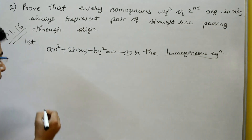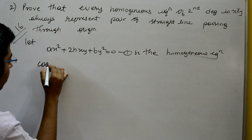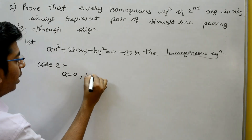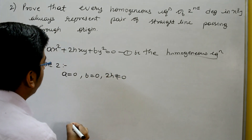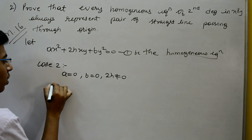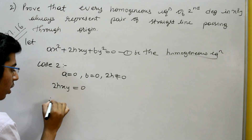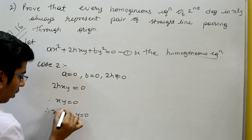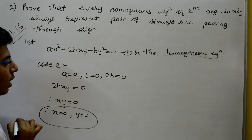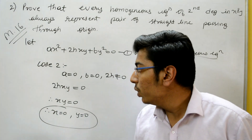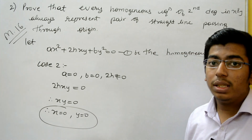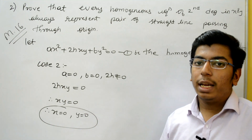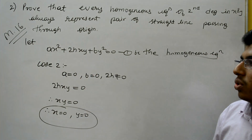Case 2: put A = 0 and B = 0, but 2H ≠ 0. Then equation 1 becomes 2HXY = 0, therefore XY = 0, giving X = 0 and Y = 0. We get two lines passing through the origin, so this case is also satisfied.